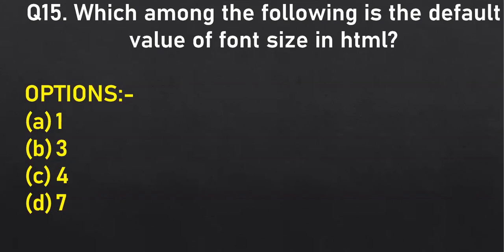Which among the following is the default value of the font size in HTML — one, three, four, or seven? B option three. Arman confirms: B option three. Seven is the highest, so the default is three. Very right, very correct, and I appreciate your confidence level — good.